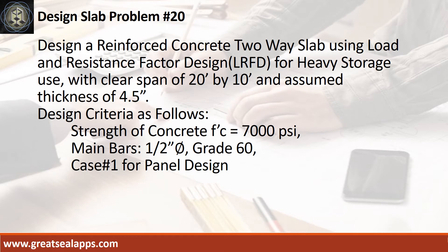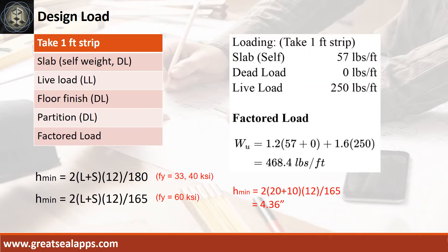Design a reinforced concrete two-way slab using load and resistance factor design for heavy storage use, with a clear span of 20 feet by 10 feet and assumed thickness of 4.5 inches. Design criteria: strength of concrete, 7,000 PSI; main bars, 1/2 inch diameter, grade 60; Case 1 for panel design. The given uniform load for the 4.5-inch thick slab is 57 pounds per square foot, heavy storage live load is 250 pounds per square foot, for a total factored load of 468.4 pounds per square foot.